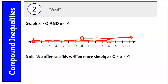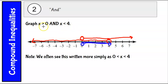So the solution — the actual answer — is just the overlapping part. I would put 0 here with an open circle, and then just this part where they overlap. So 1 is a solution: 1 is greater than 0 and less than 4. 2 is greater than 0 and less than 4. 1.5 is greater than 0 and less than 4.